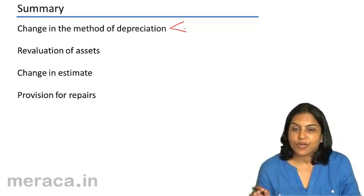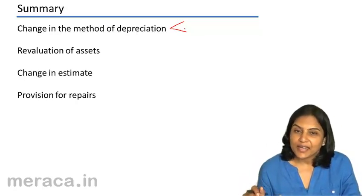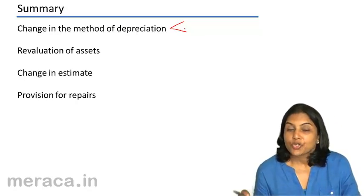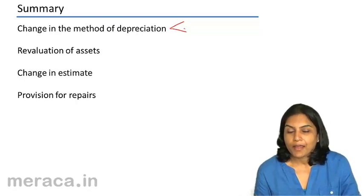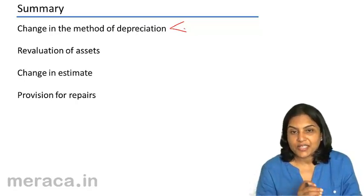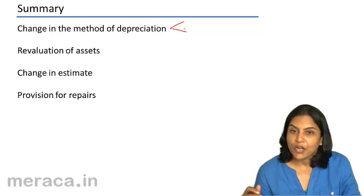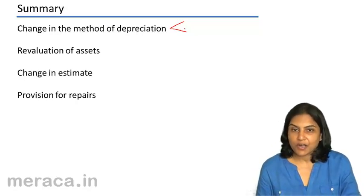in that case, and only in that case, we can debit the asset account and credit the profit and loss account to the extent that there was a downward revaluation of the asset previously. Anything beyond that would be taken to revaluation reserve account.